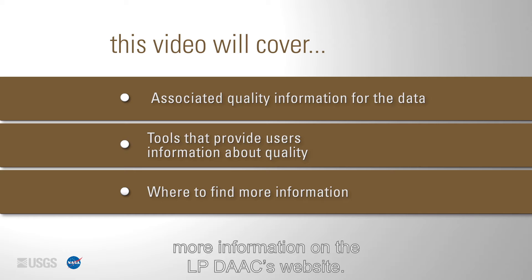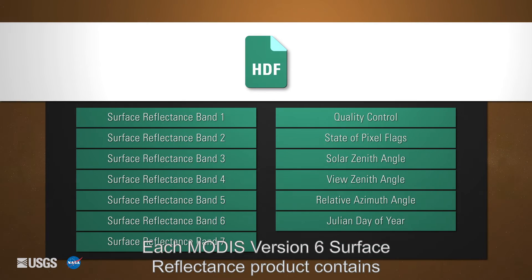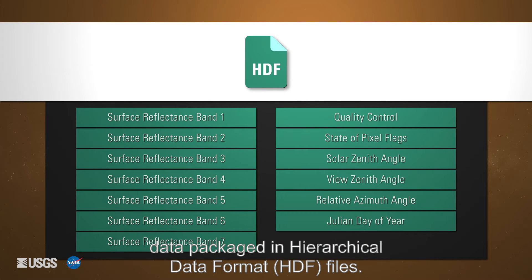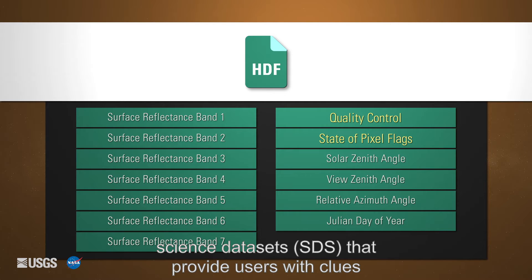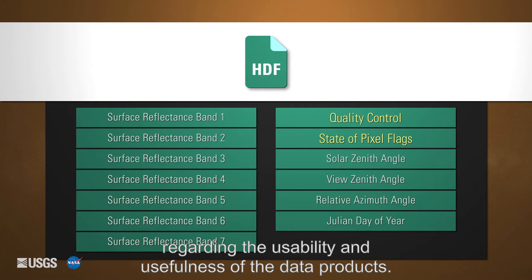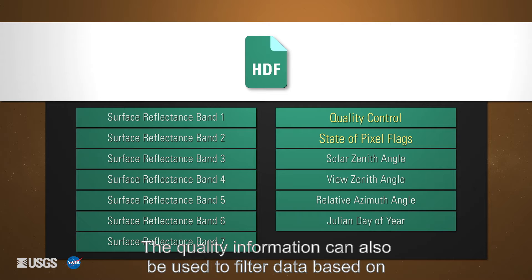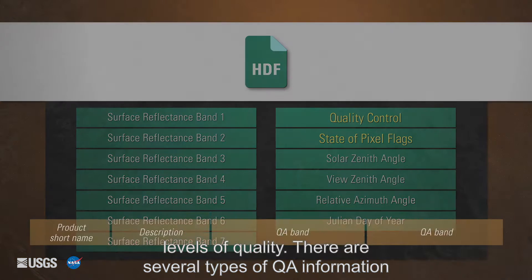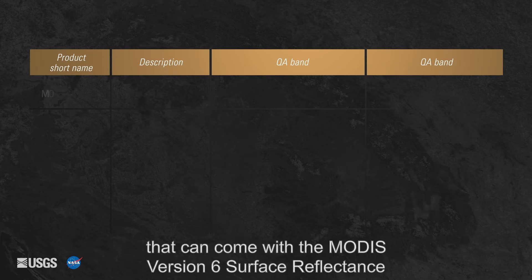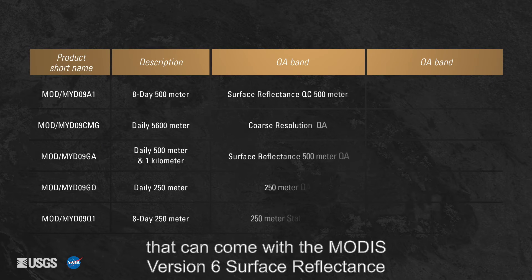Each MODIS version 6 surface reflectance product contains data packaged in Hierarchical Data Format (HDF) files. Within each HDF file are several quality assurance (QA) science data sets (SDS) that provide users with clues regarding the usability and usefulness of the data products. The quality information can also be used to filter data based on levels of quality. There are several types of QA information that can come with the MODIS version 6 surface reflectance data products.